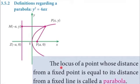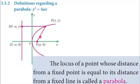The locus of a point whose distance from a fixed point F is equal to its distance from a fixed line is called a parabola. So if the distance between the line and the moving point P and the distance between the focus F and P are equal, we call it a parabola. When the point is anywhere on the curve, these two distances will always be equal.